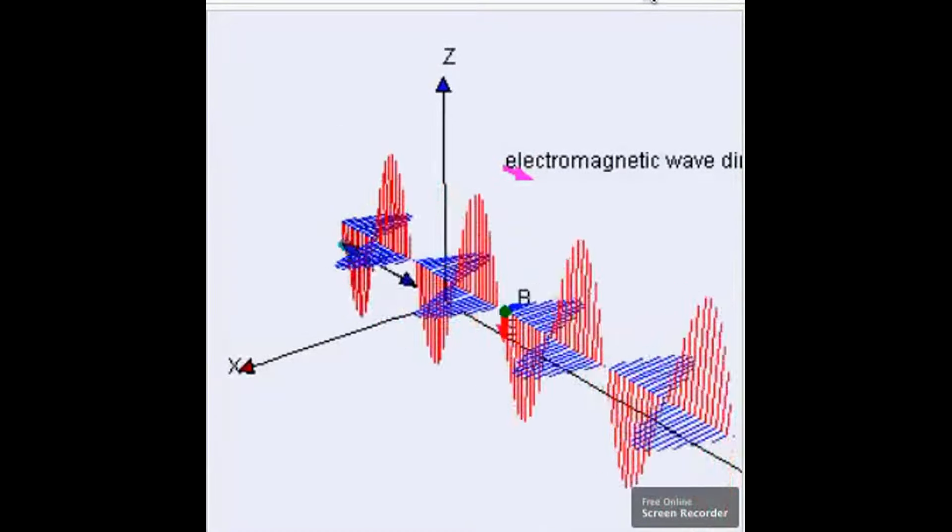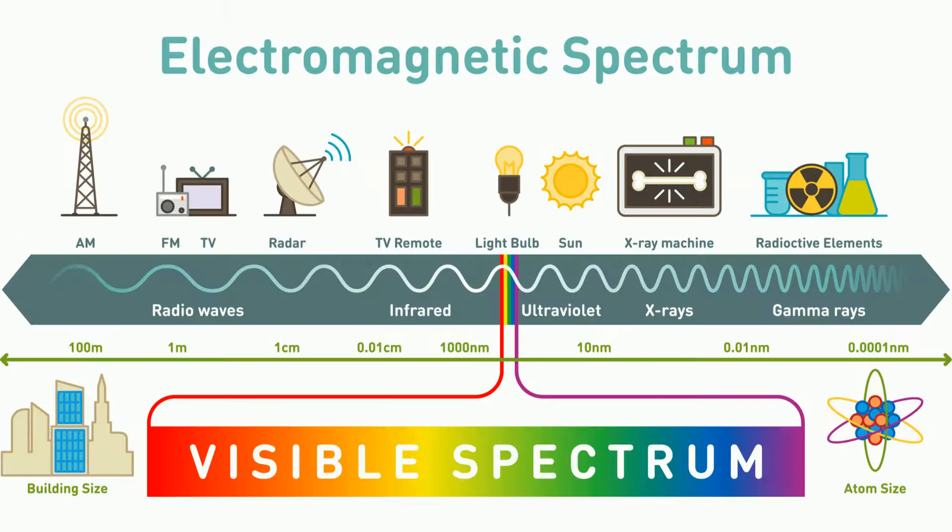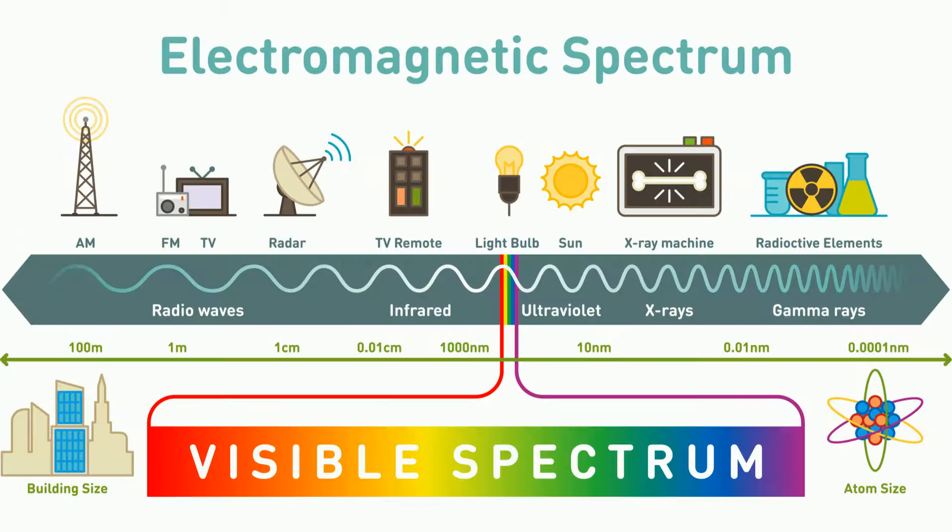The electromagnetic spectrum is ordered by frequency, which is the number of wavelengths that pass a fixed point per second. Frequency is measured in Hz and the spectrum has a very wide range from 300 kHz to an incredibly small 3×10²¹ hertz.